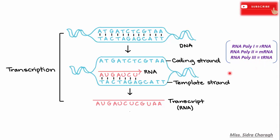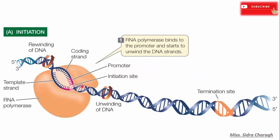In transcription there are three main steps: initiation, elongation, and termination. Transcription always starts at the RNA polymerase binding site called the promoter on the DNA template strand. In prokaryotes, within the promoter there are two binding sites: TTGACA, also called the minus 35 sequence, and TATAAT, also called the minus 10 sequence, which have affinity for the RNA polymerase.